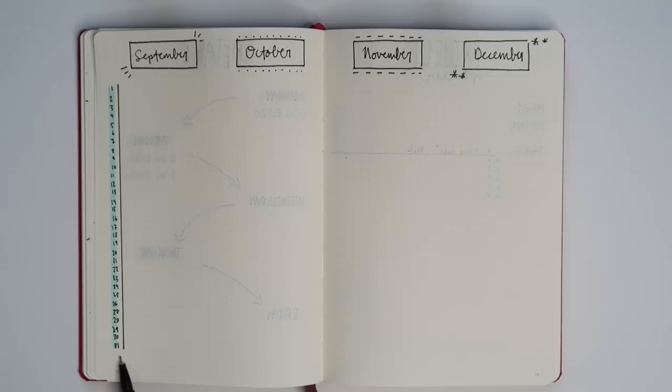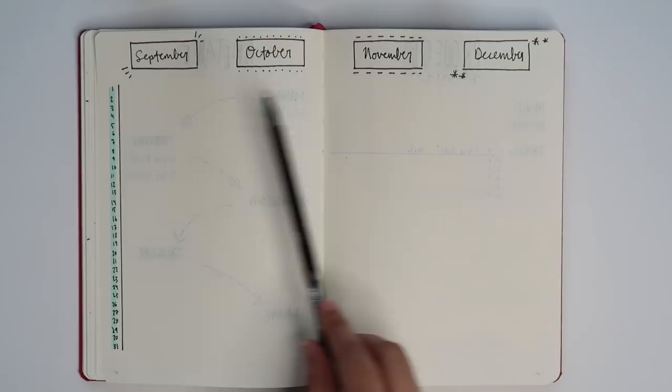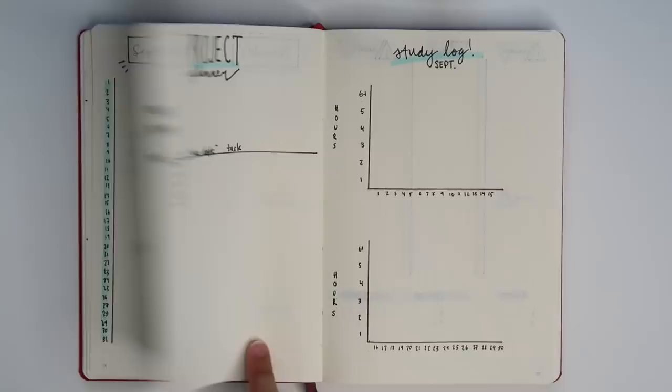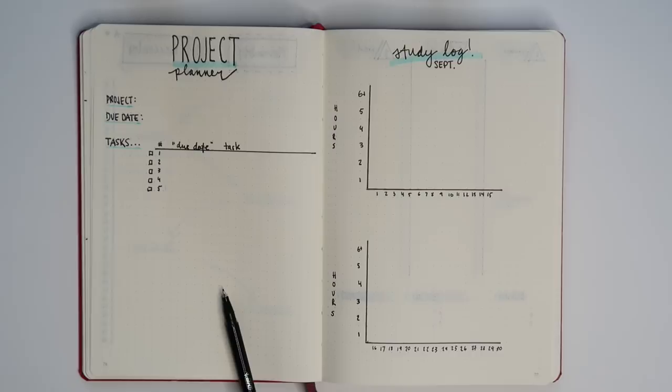And we make our way to the project planner. This one is very similar to the one I created in my last student bullet journal video but I think it's even easier to create. I think I did this one in less than a minute.